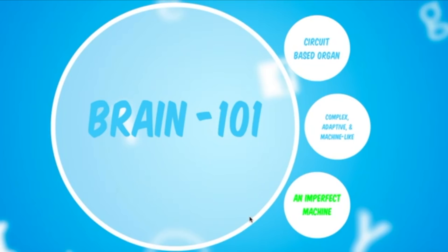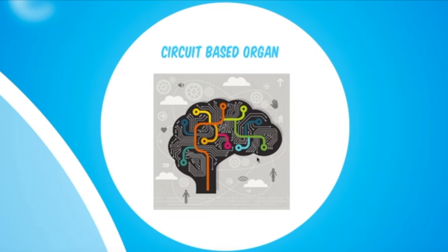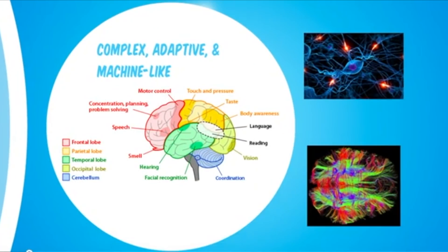The brain is important since we're talking about thoughts and cognitive distortion. This incredibly complex piece of biological circuitry that we all carry around - the most advanced neurobiological technology out there - is the product of evolution. This is what separates us from all other animals. It's circuit-based, like a biological computer: complex, adaptive, and machine-like. These are all key features of why the brain is so resilient and effective.